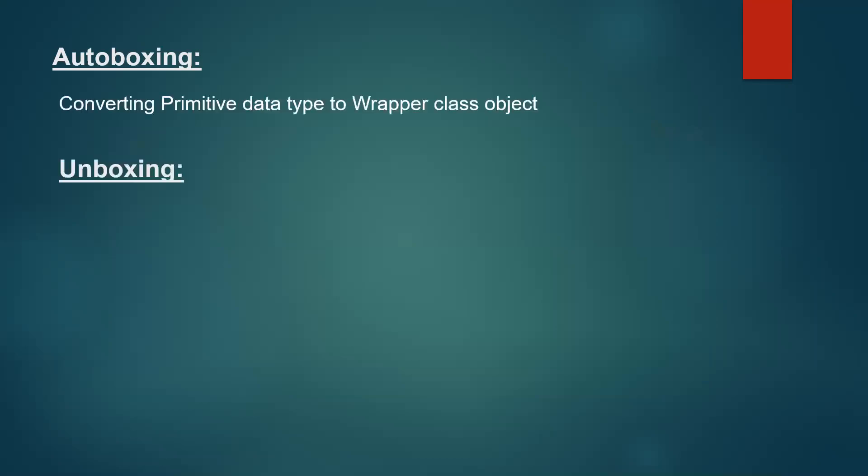If we have a primitive data type and we want to convert it into a wrapper class object, this conversion process is called auto boxing. The reverse — taking a wrapper class object and converting it into a primitive data type — is called unboxing.